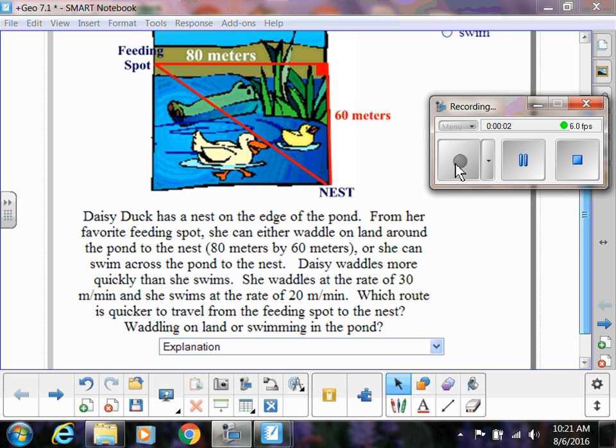So I want to pose this question to you. We've got Daisy Duck, and she has a nest on the edge of a pond, and from her favorite feeding spot, she can either waddle on land around the pond to her nest, which is the 80 by 60 meters that is shown in the diagram, or she can swim across the pond to the nest.